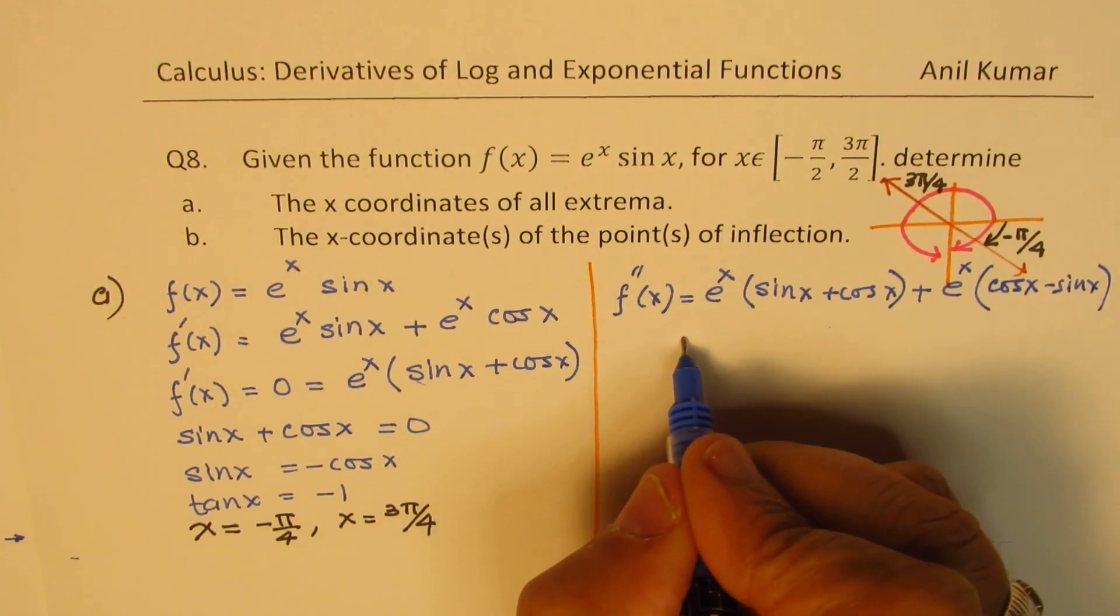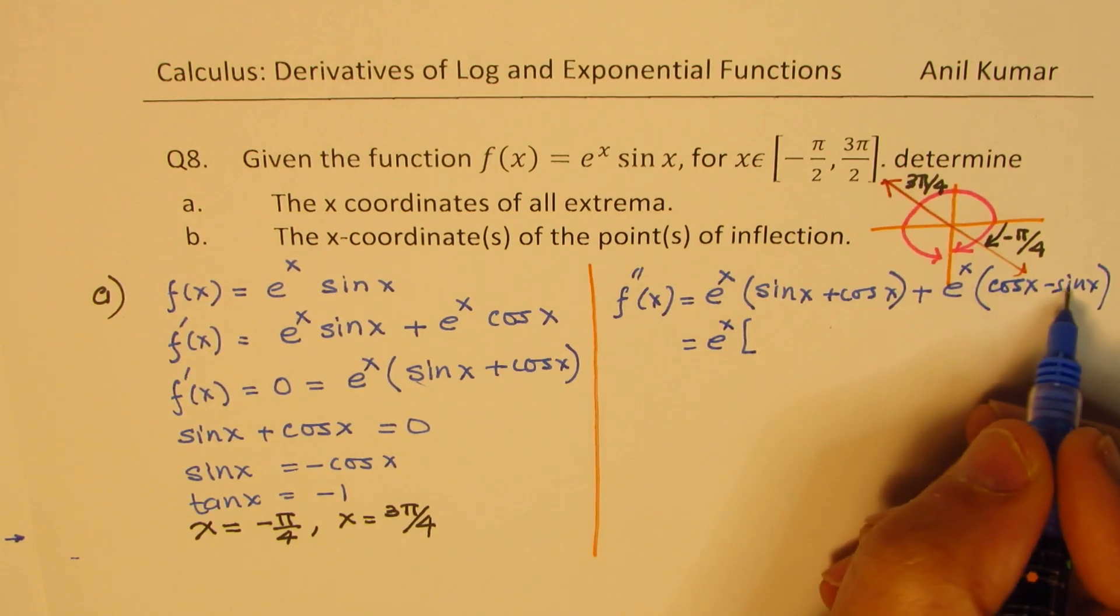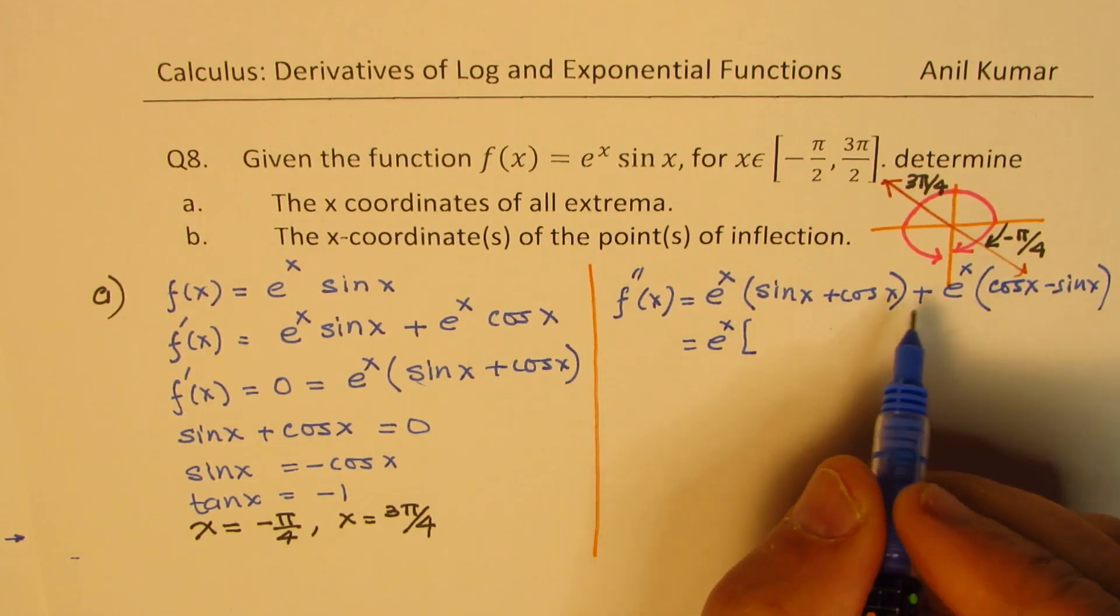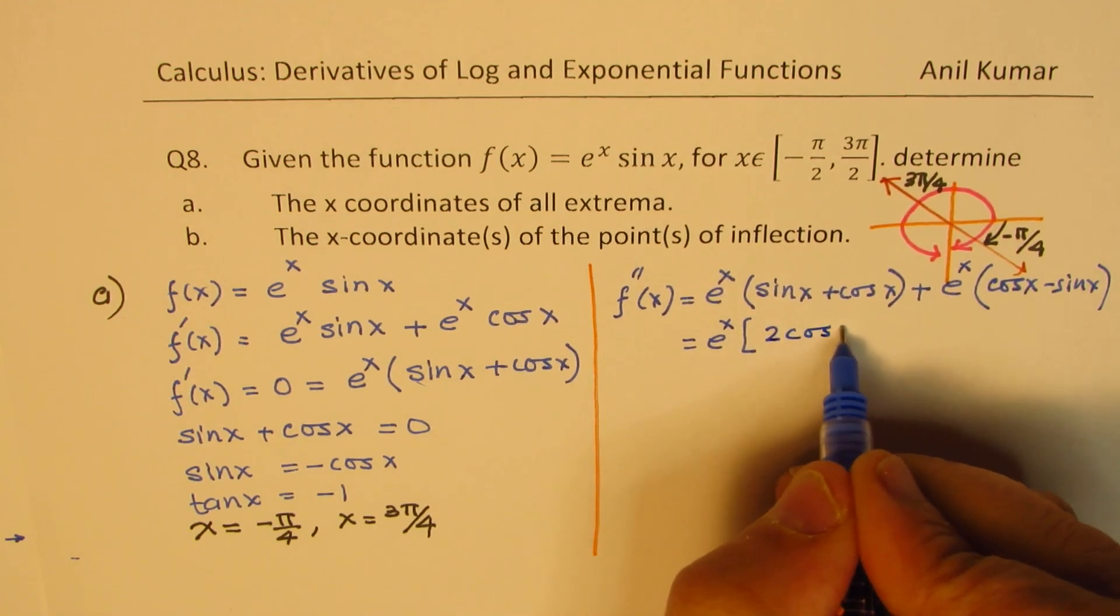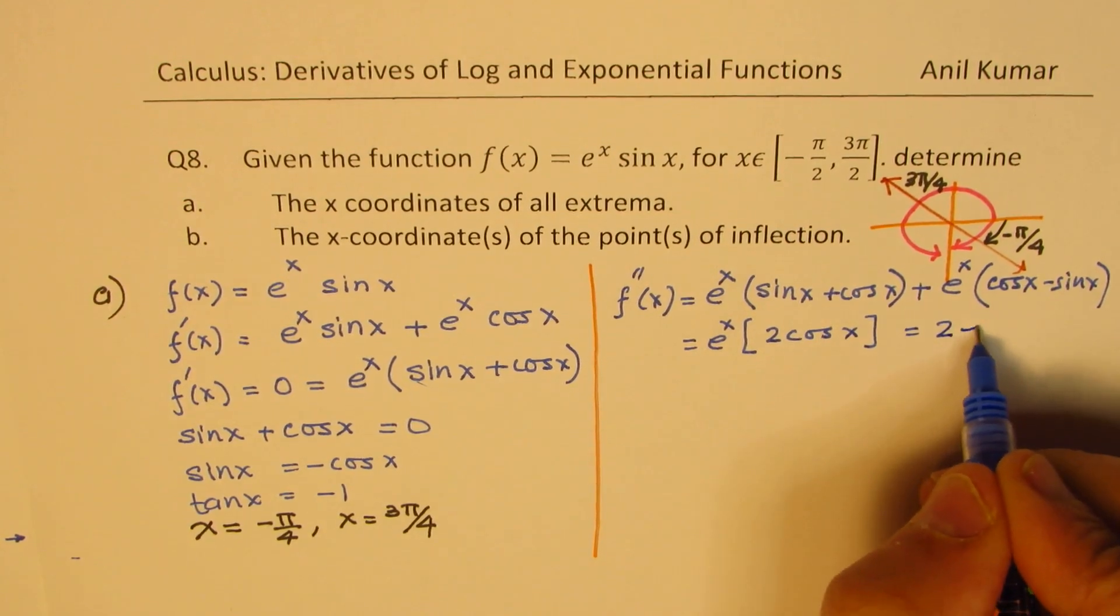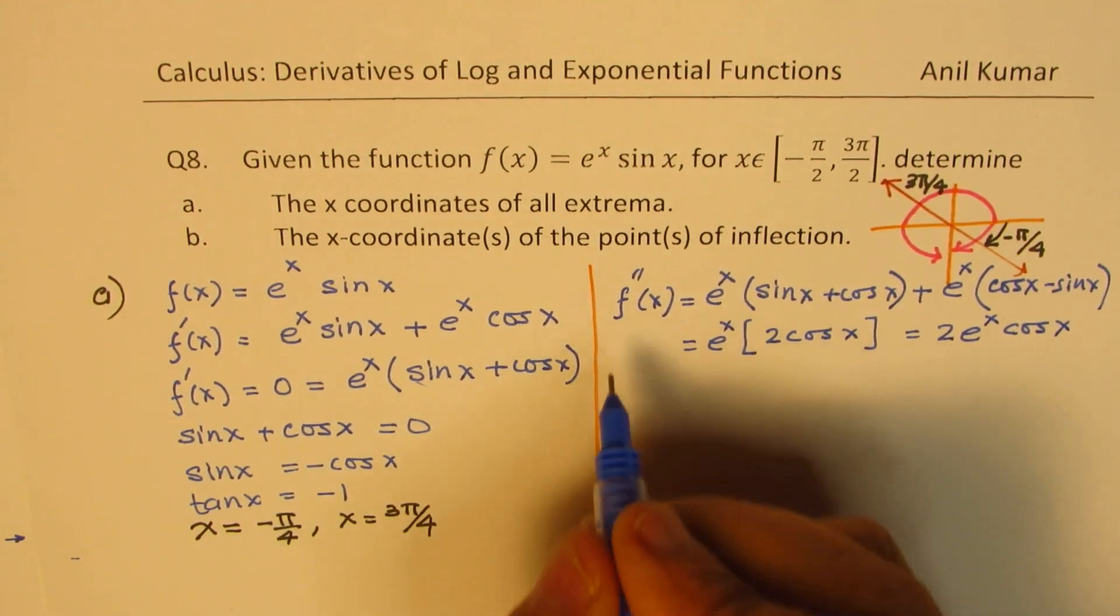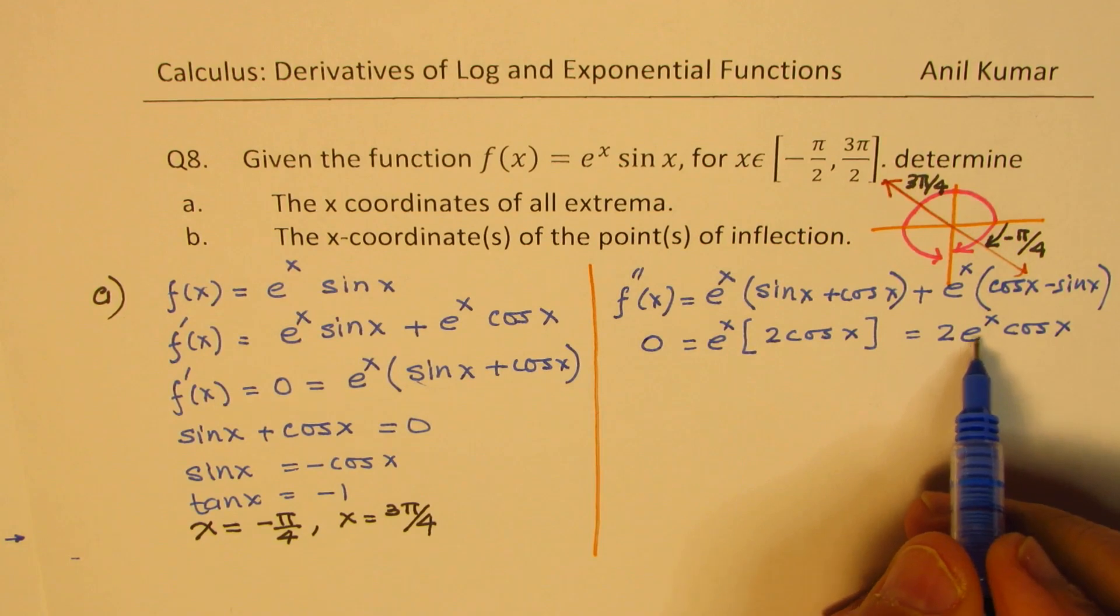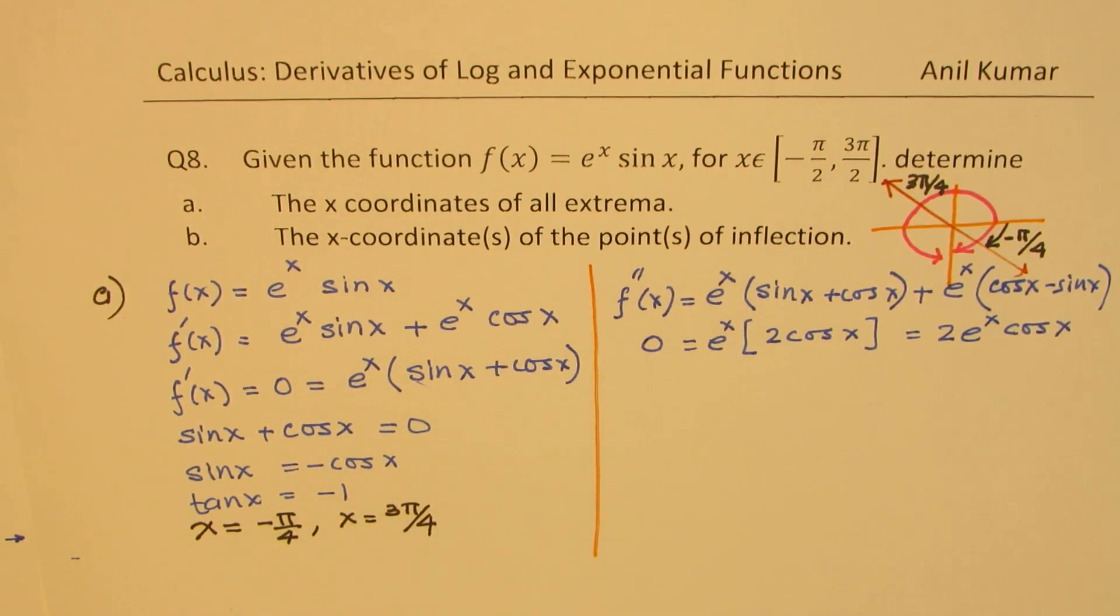So combining what we get here is e to the power of x and we have sin(x) minus sin(x) will cancel and we have 2 cos(x). So we get 2 e to the power of x cos(x). Now, that could be equal to 0. For point of inflection, e to the power of x can never be 0, but cos(x) can be 0. So we'll see when is cos(x) equal to 0.